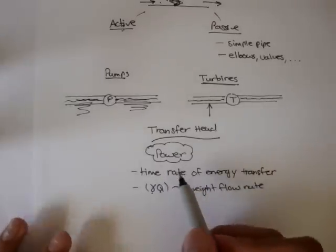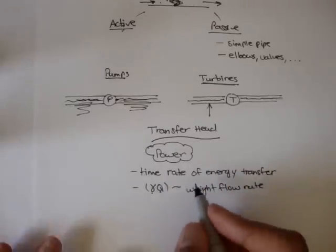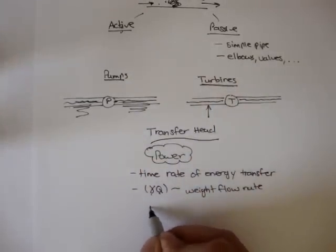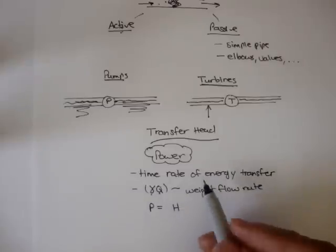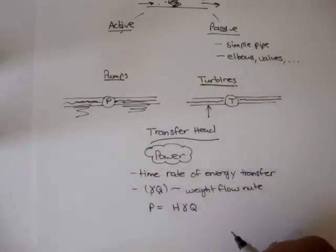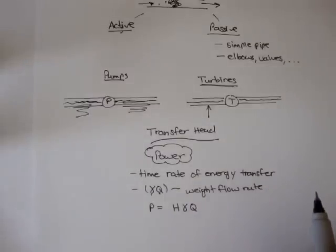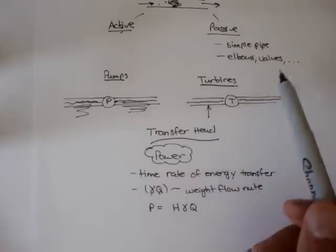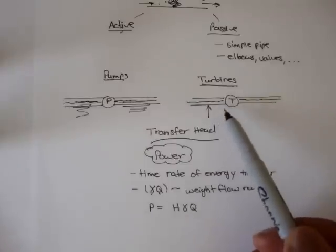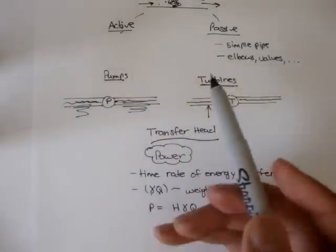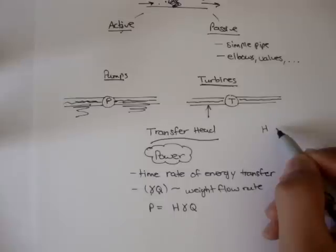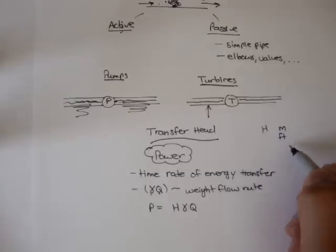Power is equal to the product of the device transfer head — either a pump or a turbine — times the weight flow rate. So we can say power equals the pump head or turbine head times gamma Q. Remember, the transfer heads represent the energy content — a turbine taking away energy or a pump giving energy to the water. Heads are usually in units of length: meters, feet, inches, centimeters, etc.